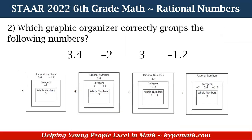Let's look at our next problem — remember, these problems are in our workbook available in our store, link in the description box. Number two says: which graphic organizer correctly groups the following numbers: 3.4, negative 2, 3, and negative 1.2? For F: rational numbers has 3.4 and negative 1.2, integers has negative 2, whole numbers has 3. For G: rational numbers has 3.4, integers has negative 2 and negative 1.2, whole numbers has 3. For H: rational numbers has 3.4, integers has negative 1.2, whole numbers has negative 2 and 3. For J: rational numbers is empty, integers has negative 2, 3.4, and negative 1.2, whole numbers has 3.